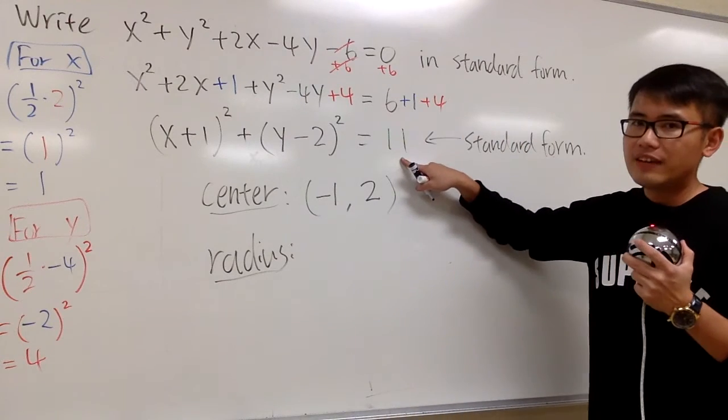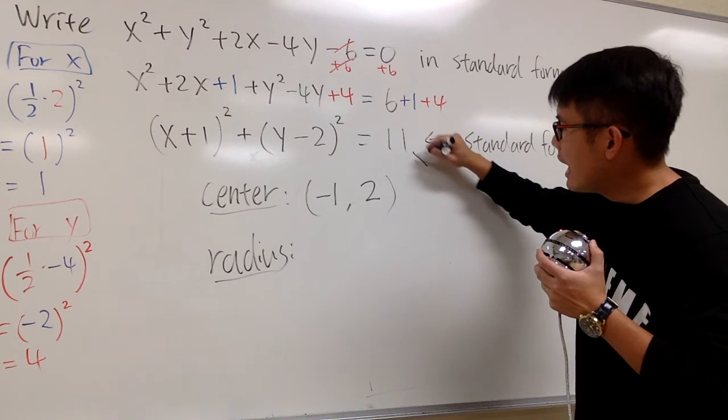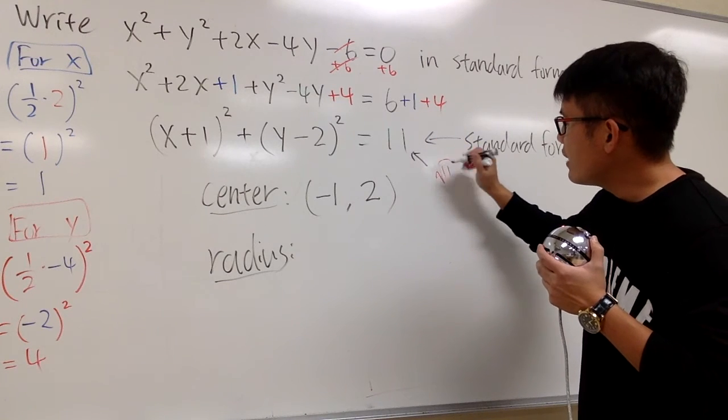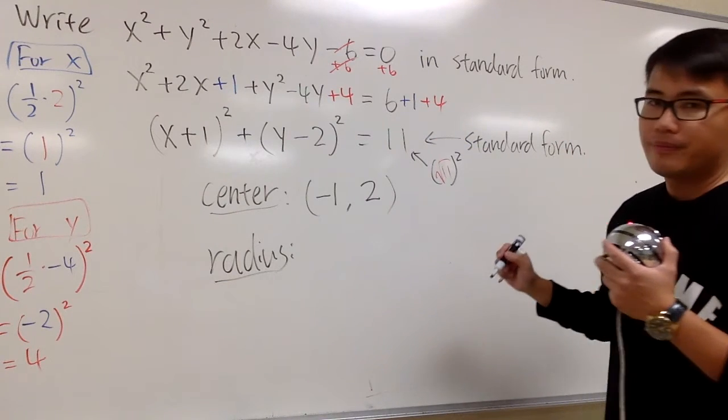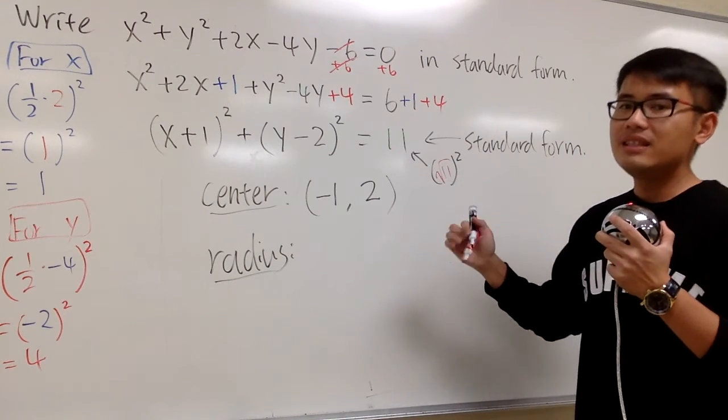And how about the radius? Well, here we have 11, but we don't look at the 11 as 11. We look at this 11 as square root of 11 square. In another word, square root of 11 is the radius.